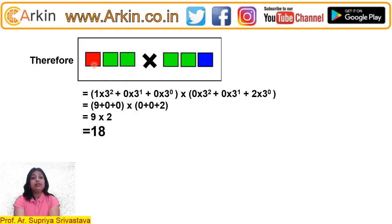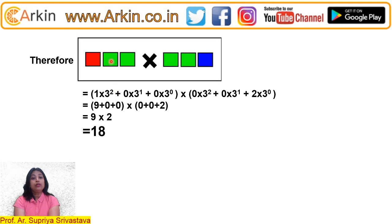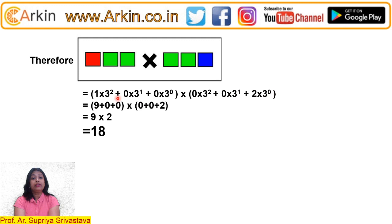Now it becomes very easy to get the answer. We substitute the color values into the multiplication: 1×3² + 0×3¹ + 0×3⁰ multiplied by 0×3² + 0×3¹ + 2×3⁰, which gives 9 × 2 = 18. So the answer is 18.